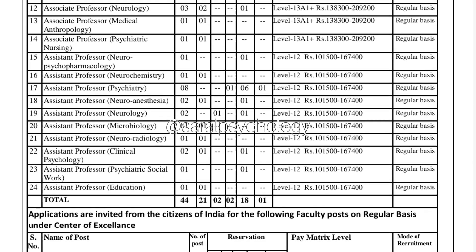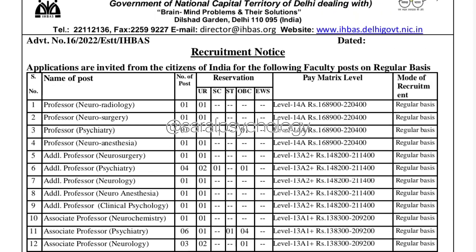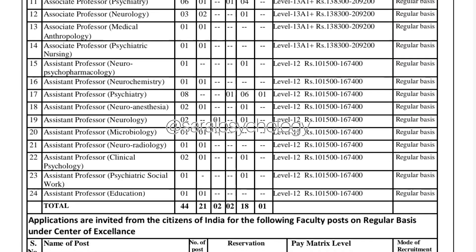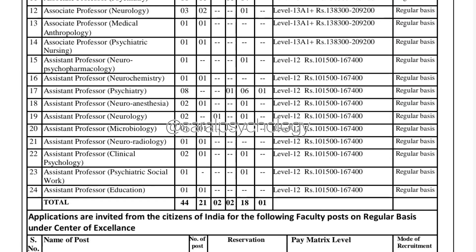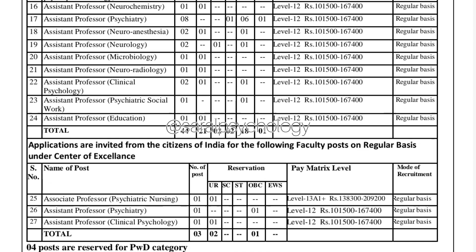There are 22 posts which are vacancies for Assistant Professor in Clinical Psychology. Under this, there are two vacancies — one for General category and one for OBC. The pay scale is 1,15,000 to 1,67,400. This is a permanent job on a regular basis.